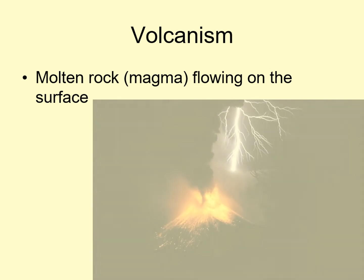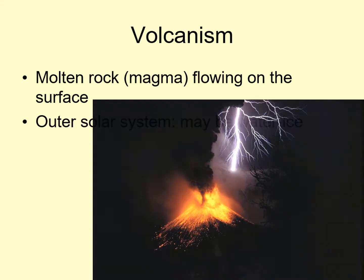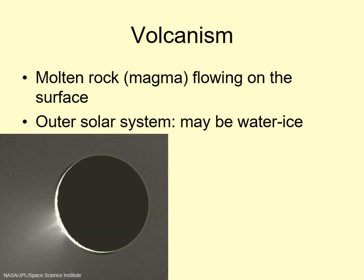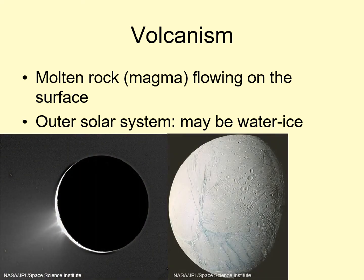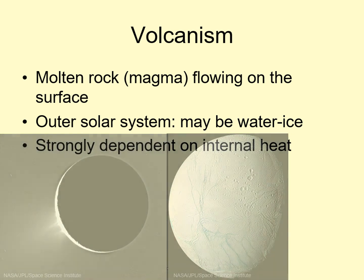The next major surface process is volcanism. Volcanism is the eruption of molten rock or magma onto the surface of a world. Notice that in the outer solar system, most moons have ice as the major surface rock, so the volcanoes there are ice volcanoes instead. Below we're seeing two pictures of Enceladus, a moon of Saturn, with active ice volcanoes. One of the images shows the eruption of water ice crystals out into the space surrounding Enceladus.